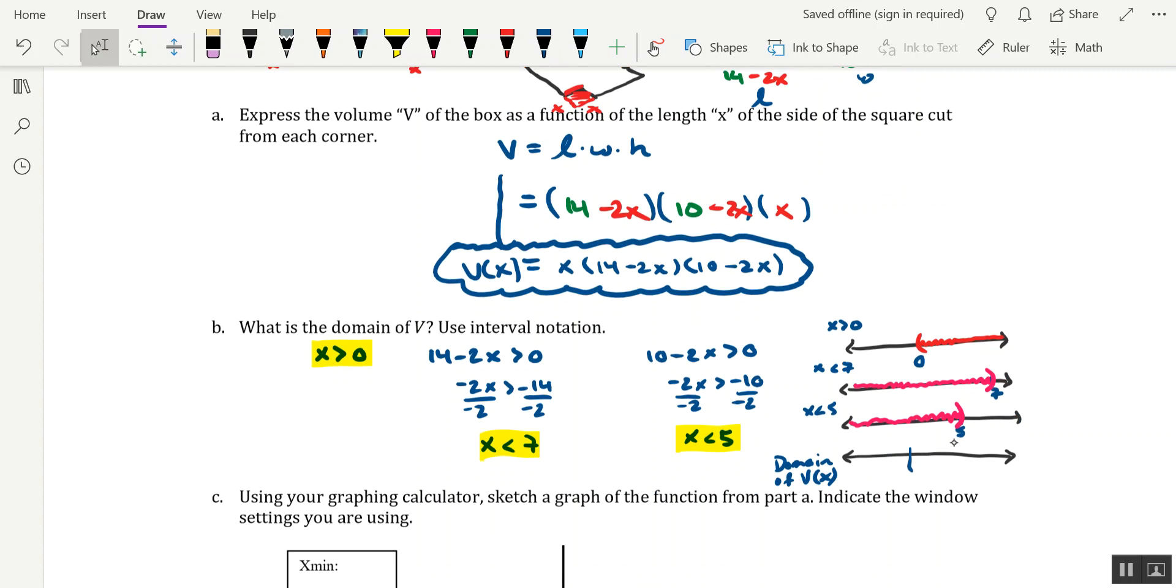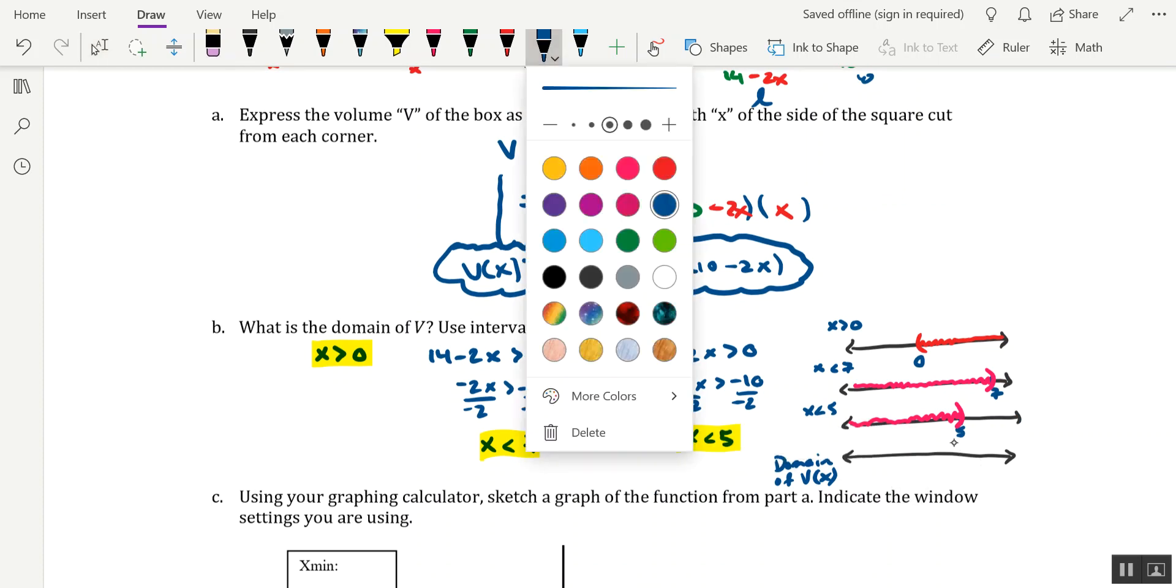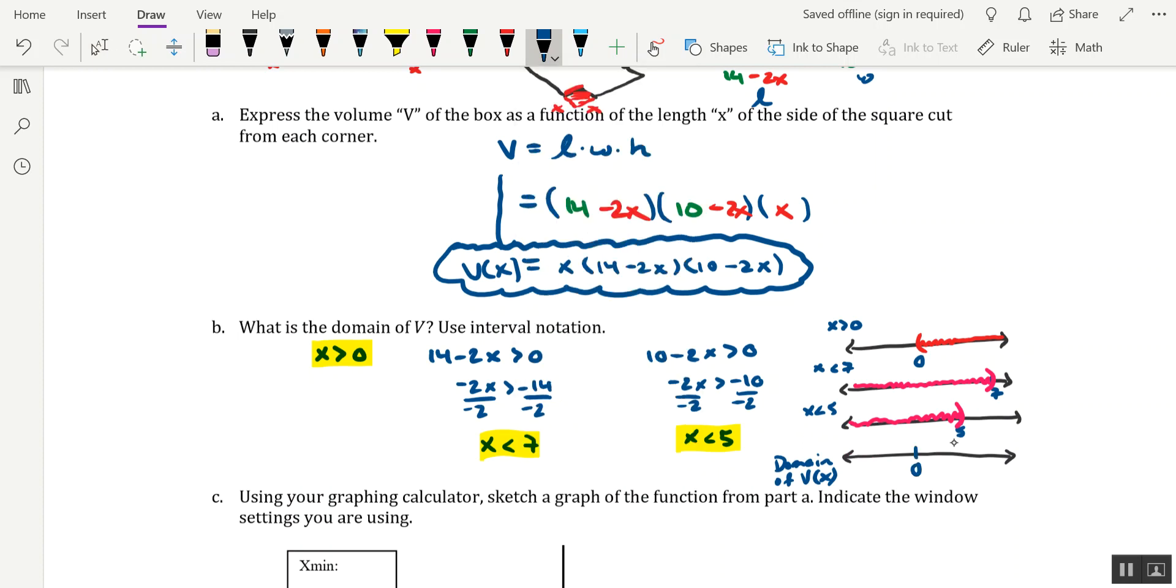So on this final number line, I'll put a tick mark for 0 and a tick mark for 5, and then shade what's between those two values. And parentheses on each of them. So in interval notation, what that would mean is that our domain is 0 comma 5 and parentheses on each of these.